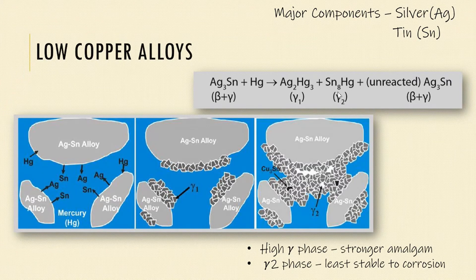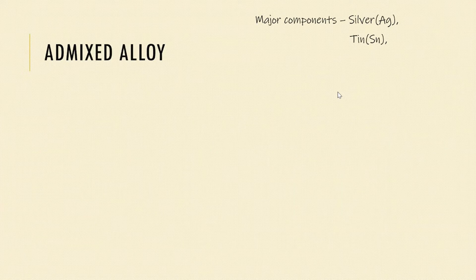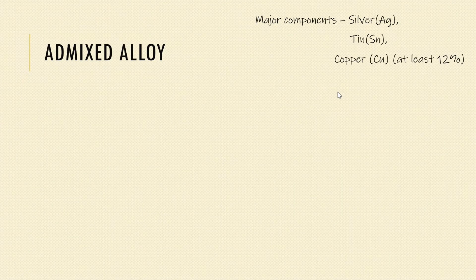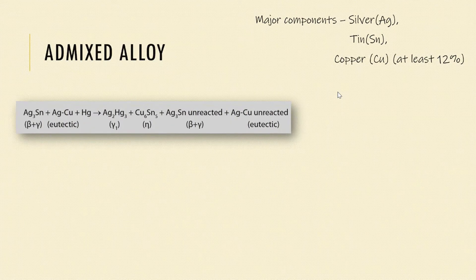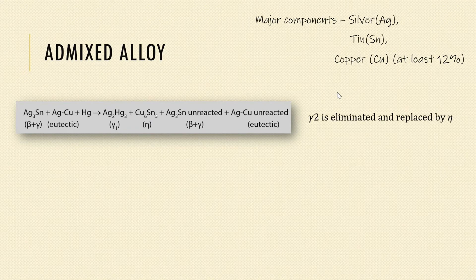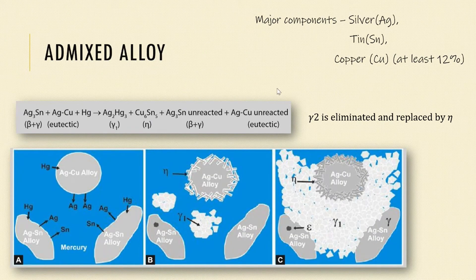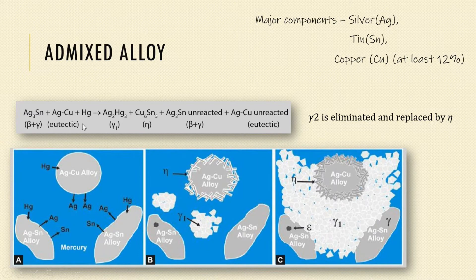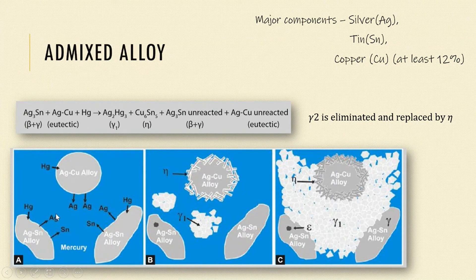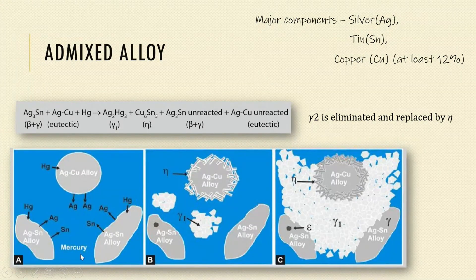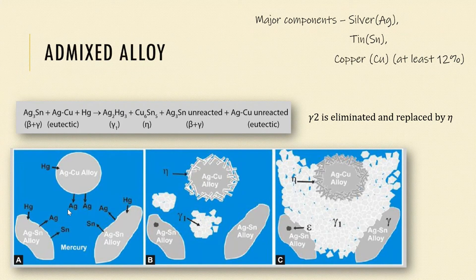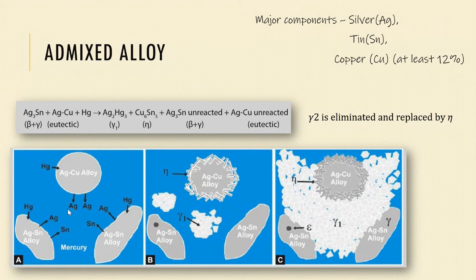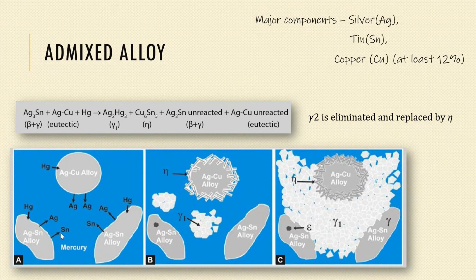Now coming to the admixed alloys, here one part of silver copper eutectic alloy is mixed with two parts of silver tin alloy. When the components are mixed, the mercury begins to dissolve the outer portion of particles. Here silver from silver copper eutectic alloy and both silver and tin from silver tin alloy react with mercury. Tin dissolved in mercury reacts with copper in the eutectic alloy.